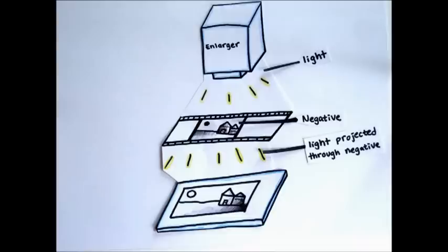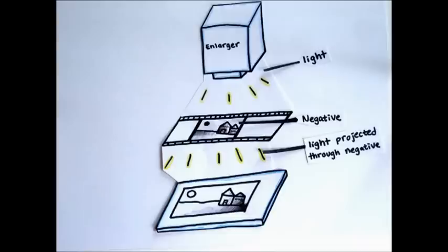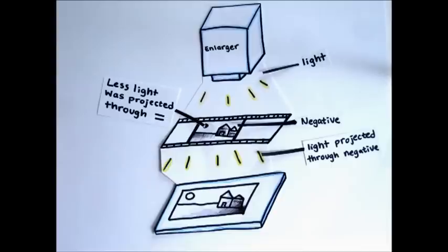Photographic prints are made by exposing paper to light projected through a negative. The amount of light that reaches the paper varies depending on the density of the negative. Areas where more contrast built because more light was exposed result in a dark, thick density image which allows less light to be projected through a negative.